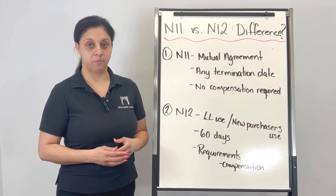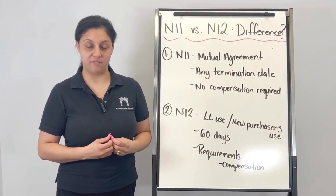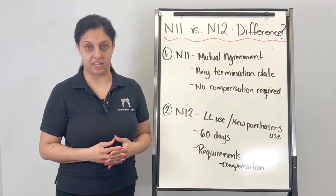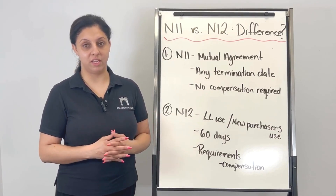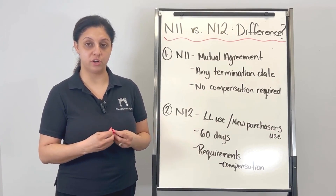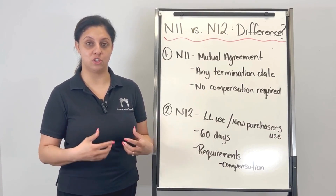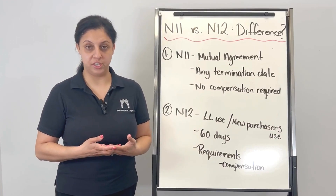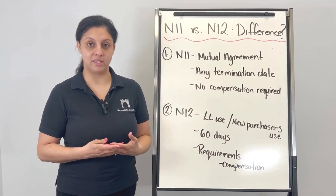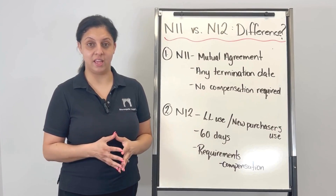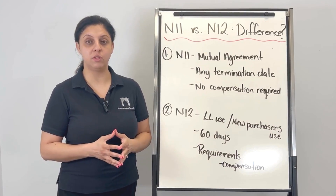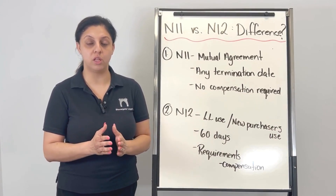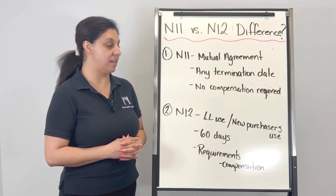Let's talk about the N11. The N11 is a mutual agreement to end the tenancy — kind of like a mutual release where the parties are agreeing to dissolve the tenancy. The termination date on when that tenancy comes to an end is what the parties agree to, because it's a mutual agreement to end the tenancy.